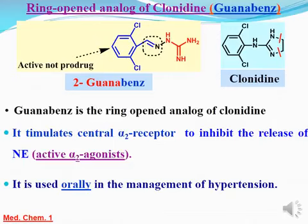يبقى الـ guanabenz عبارة عن 2,6-dichlorobenzylidene amino guanidine. الـ guanabenz بتاخد oral. قلنا الـ clonidine في منه oral وفي منه injection اللي هو الـ clonidine HCl. وبرضو active agonist على الـ alpha-2 receptors، بيقلل الـ release بتاع الـ norepinephrine ويُستخدم for treatment of hypertension.